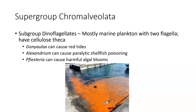The next supergroup is Chromalveolata. The first subgroup here is our dinoflagellates. This group has two flagella. They don't really have a complete cell wall — instead they have plates that function like a cell wall, called a theca, made out of cellulose. Gonyaulax causes red tides, which we'll discuss more in the other part of the PowerPoint.